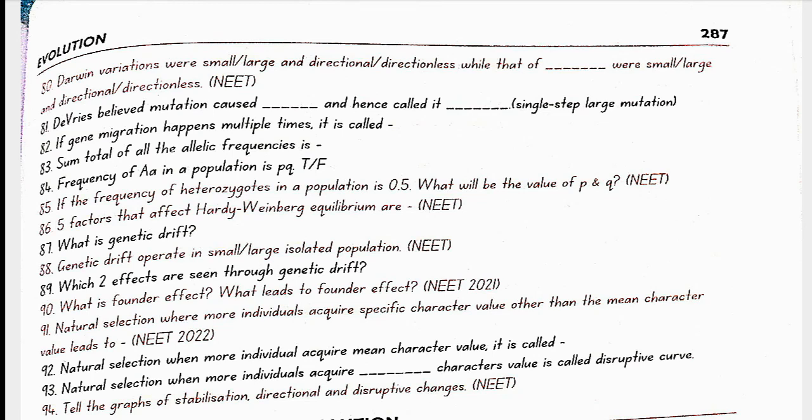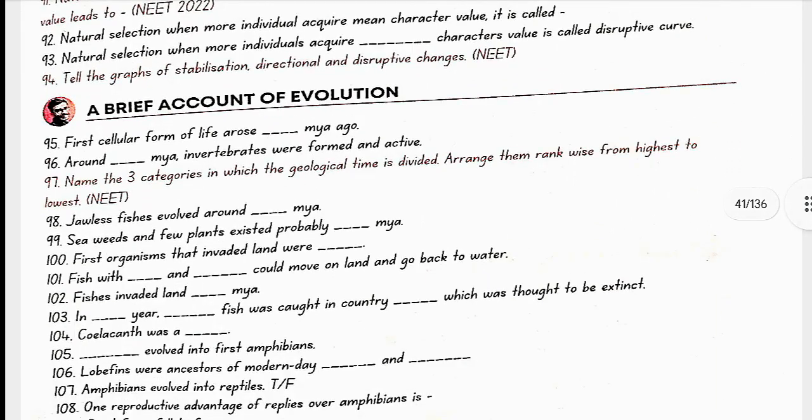Natural selection where more individuals acquire specific character value other than the mean character value leads to directional selection. Natural selection when more individuals acquire mean character value, it is called stabilization. And natural selection when more individuals acquire peripheral characters value is called disruptive curve. The graph in which the peak gets higher and narrower, it is for stabilization. In the graph in which the peak shifts in one direction, it is directional. And in which there are two peaks formed, it is disruptive.